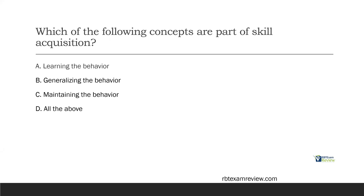A couple of quick questions. Which of the following concepts are part of skill acquisition? Is it A, learning the behavior; B, generalizing the behavior; C, maintaining the behavior? Well, it is D, all of the above. When we're teaching a skill, the behavior needs to be learned. We then want to generalize that behavior, and finally we need to make sure that behavior is maintaining — once we stop teaching it, has it persisted? All of these are important concepts in skill acquisition.